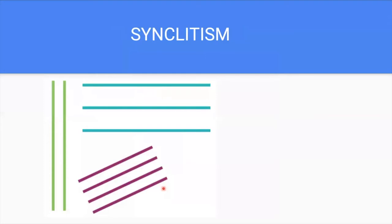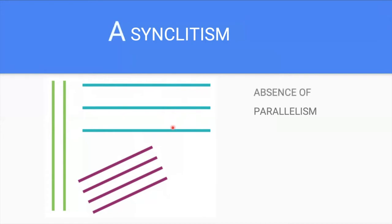Asyncletism. Before we proceed with the definition of asyncletism, let us first define what synclitism means. Synclitism is also known as parallelism. To be parallel means to be occurring side by side each other with almost equal distances between each other. Asyncletism, on the other hand, would be the absence of parallelism.